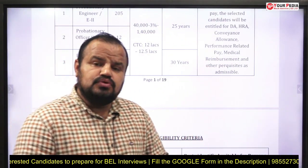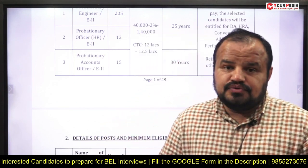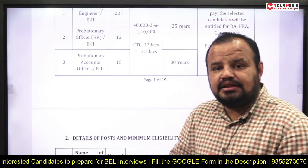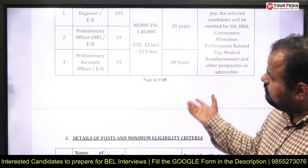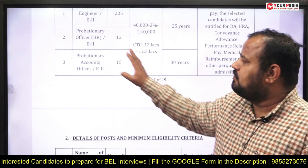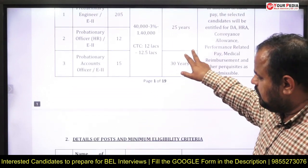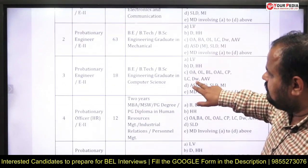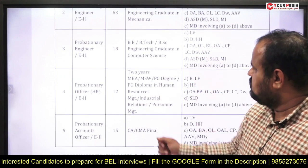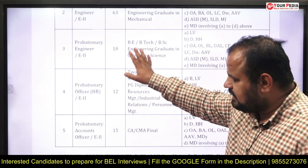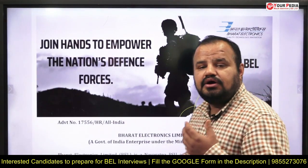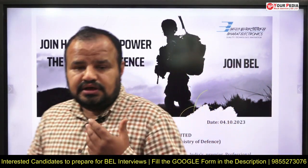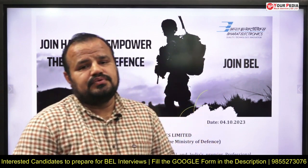Hello students, welcome to Evopedia Education. As you know, BEL has shortlisted candidates for the interview for the post of Probationary Officer (PO). The number of posts for the computer science branch is 18, and students are in a dilemma about how to start their interview process or how to prepare for it.